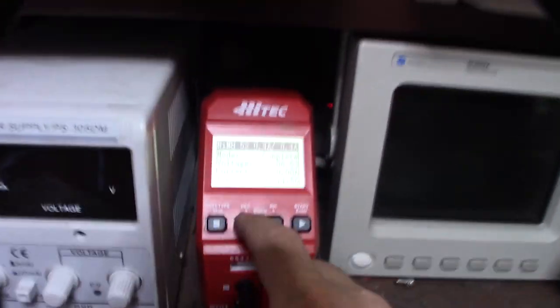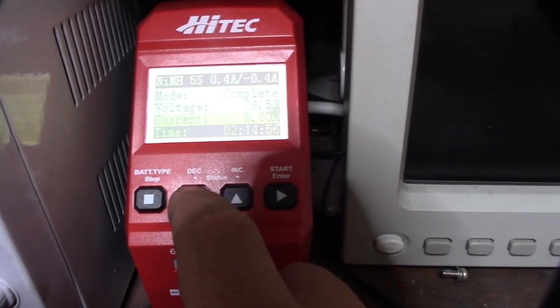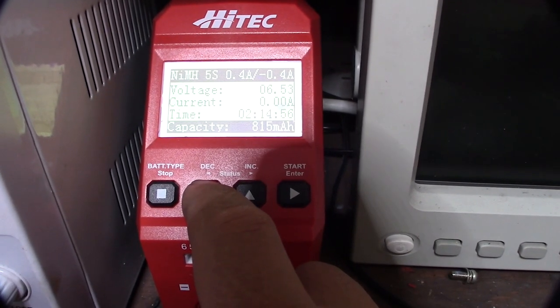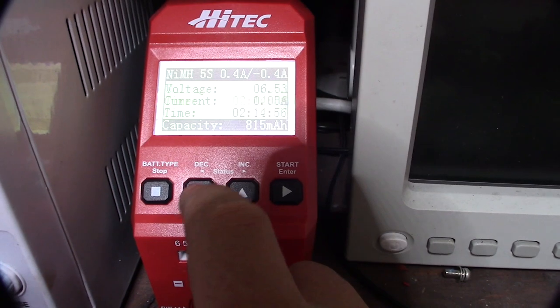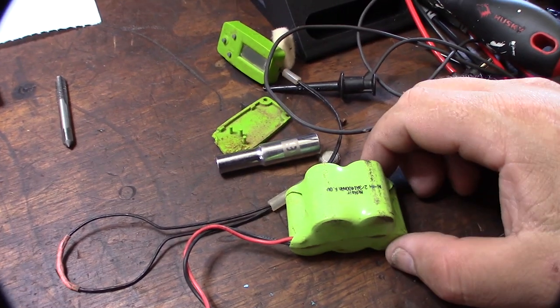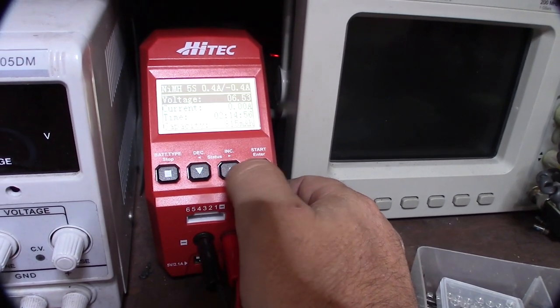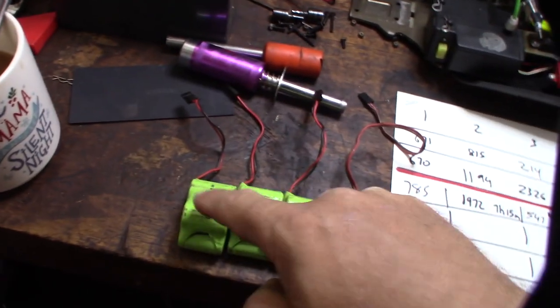The more cycles that I do, the more the capacity increases. Let me show you this real fast. This time I pulled 815 milliamps. The capacity I believe is about 1400 milliamp hours. I'm going to keep on doing this and try to bring up the range.